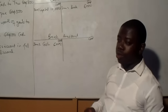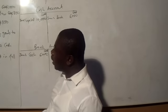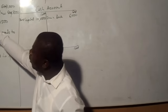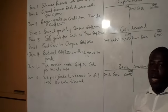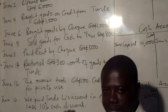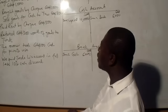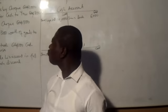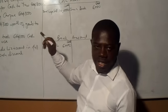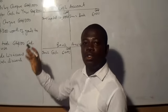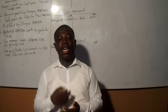Those are the double entries for those two transactions. Looking at the next transaction, June 4: they bought goods on credit from Tunde, 1,500. Because it is goods they are buying, it is purchases — goods bought for resale, stock purchases. So this is purchases account. We open Tunde's account because it is on credit. If it was a cash transaction, we would have opened purchases and cash, and Tunde's account would not have appeared in our books.